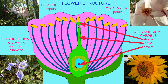The ovule consists of the protective seed coat with a pore, the micropyle, through which pollen tubes will grow so that the sperm in the pollen tubes can fertilize the egg.